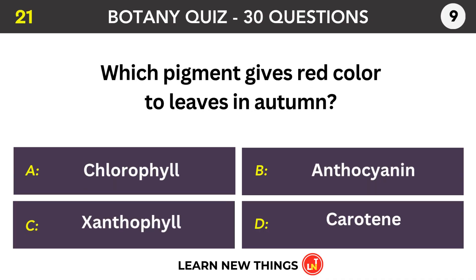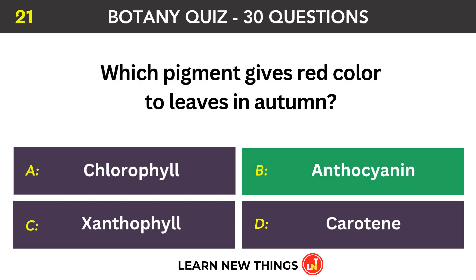Which pigment gives red color to leaves in autumn? Anthocyanin.